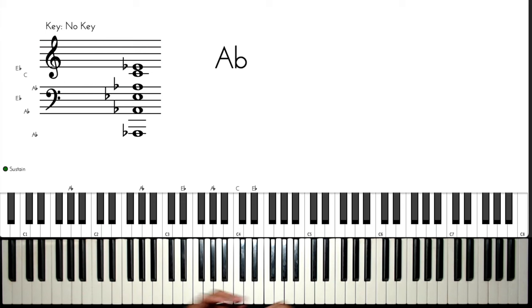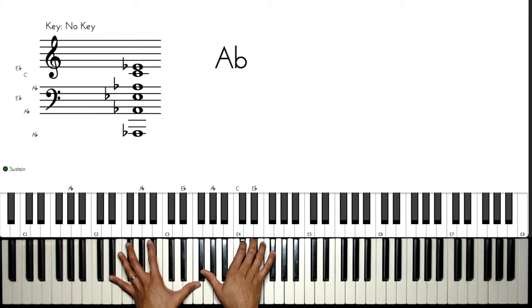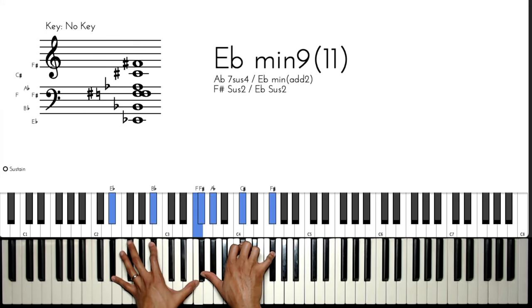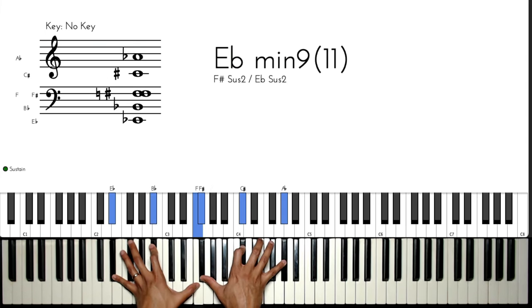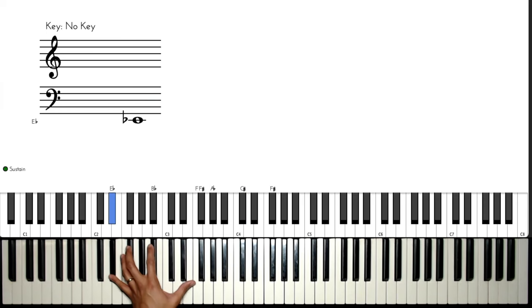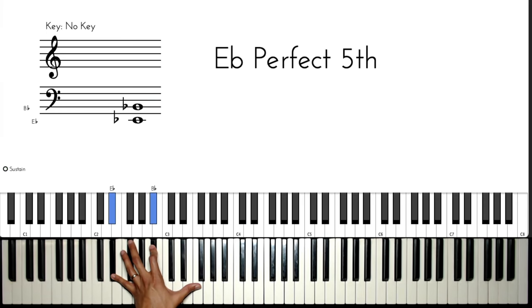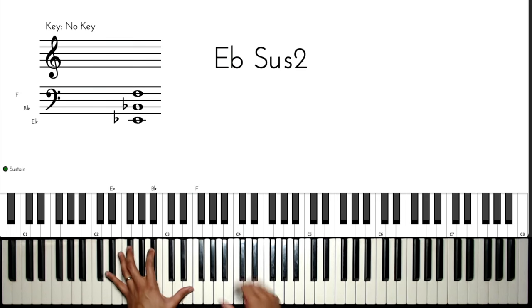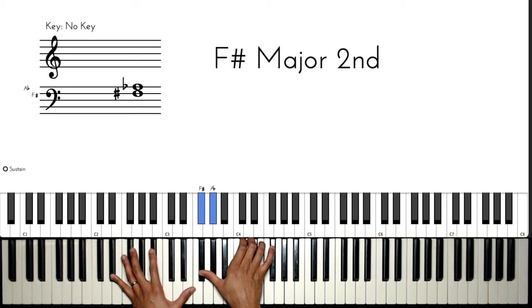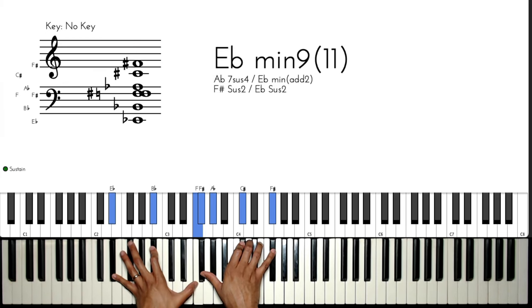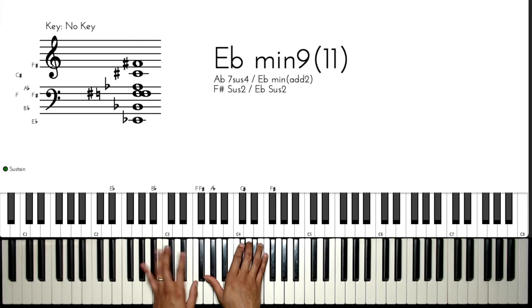What substitutions and passing chords can we use here? I like voicing my two as an E flat minor 11 chord — it's a bit of a stretch. I'm playing E flat with its fifth and its ninth in the left hand, and my right hand is playing F sharp, A flat, C sharp, and F sharp.